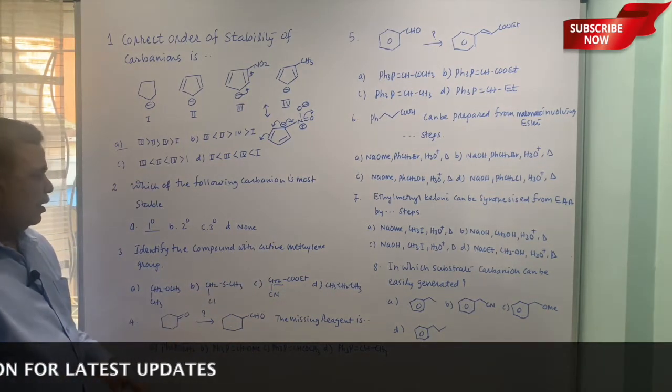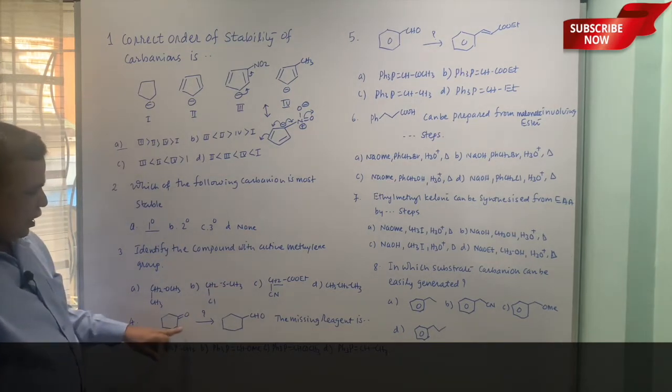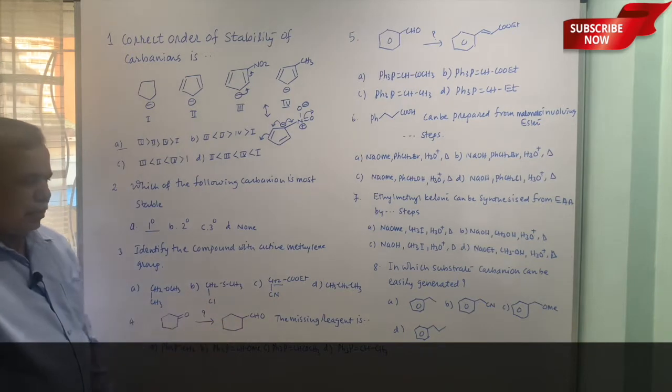So that this carbanion will be enjoying the resonance by virtue of CN as well as COOEt group. So this is the active methylene group amongst the given set.